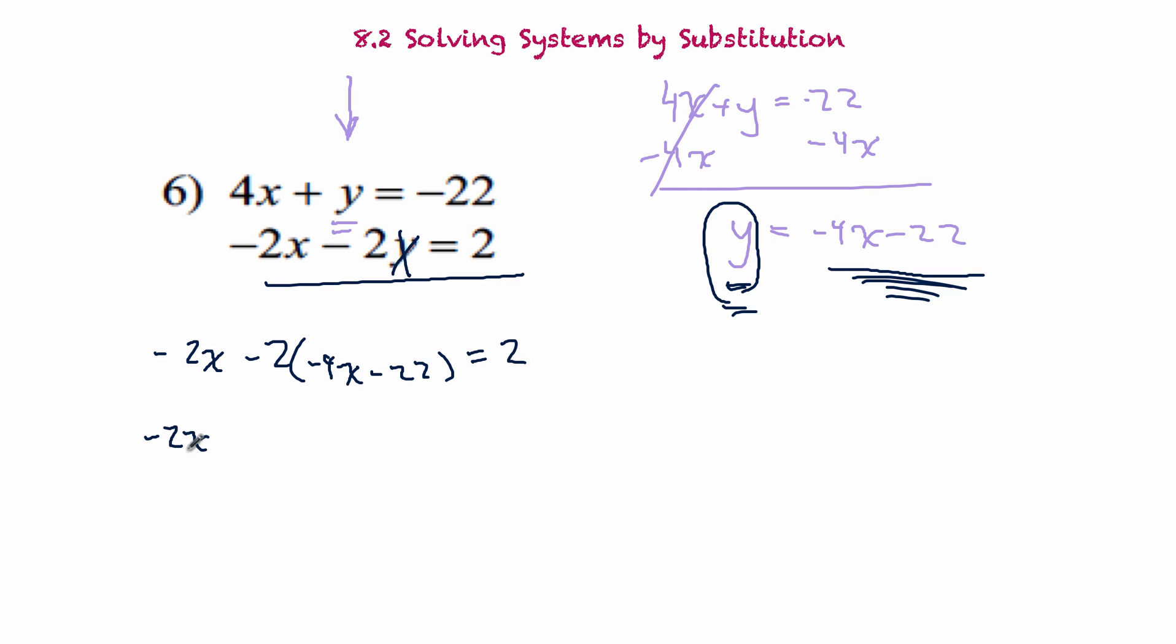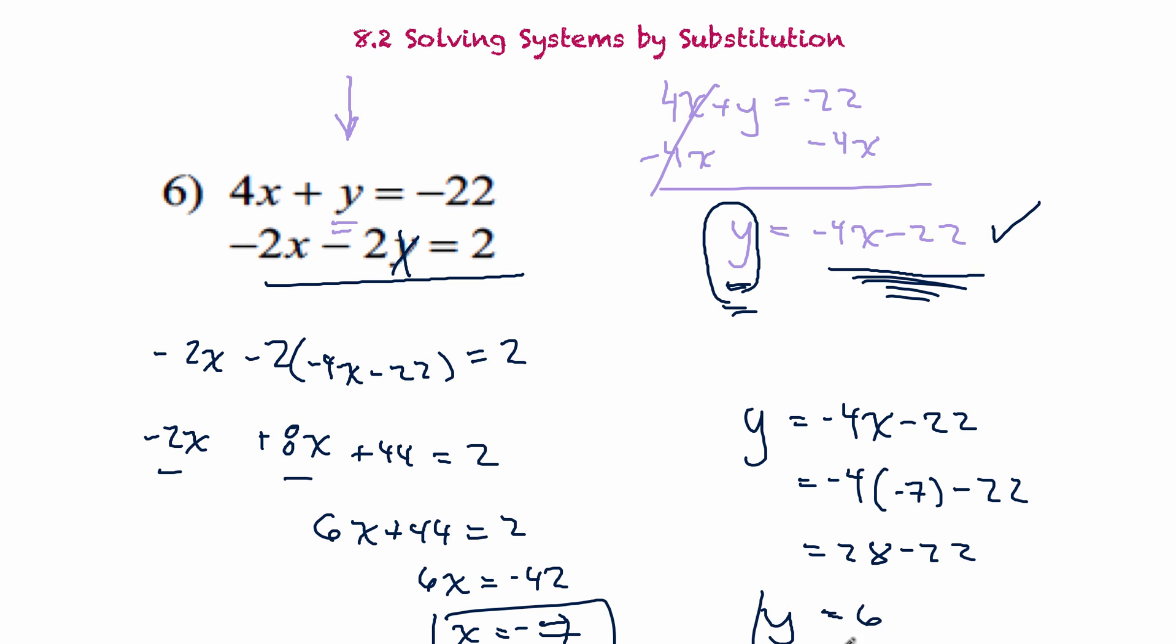I'm rewriting this equation, but I'm taking the y out and putting in what y is equal to. Then it becomes an algebra problem. We get negative 2x plus 2 times negative 4x minus 22 equals 2. So negative 2x plus 8x plus 44 equals 2. Now we combine like terms. 6x plus 44 equals 2. If I subtract 44 from each side, I'm going to get 6x equals negative 42 or x equals negative 7.